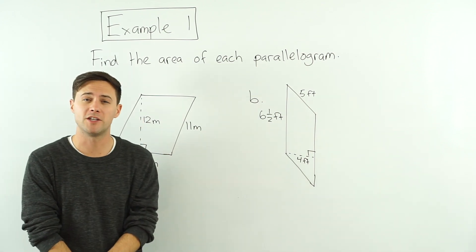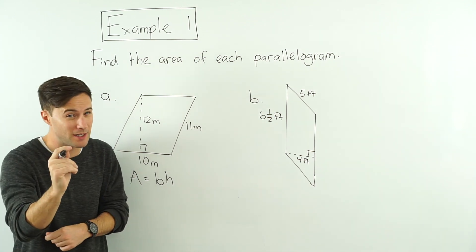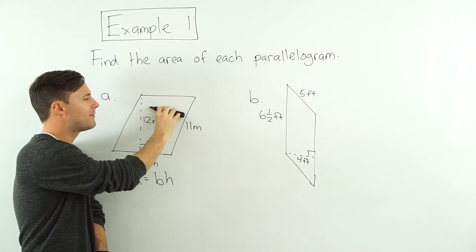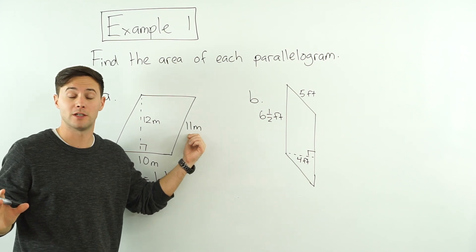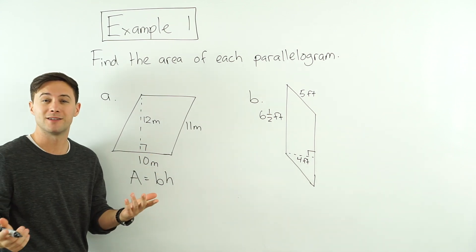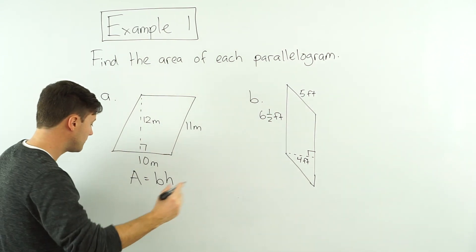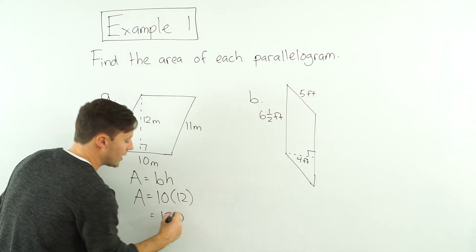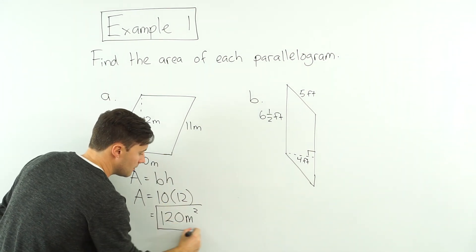Example one — find the area of each parallelogram. So what we're looking for is base times height, and remember, base and height have to be perpendicular. If I look here, I've got this 11 meters over here, but notice I don't have any length that's perpendicular to it — so this is just here to mess with you, to trick you. Don't fall for it. 10 meters and 12 meters are perpendicular. So 10 meters is my base, and perpendicular to that straight up is 12 meters — my height. Area is 10 times 12, which is 120. And remember, this is area, so the units have to be squared: 120 meters squared.